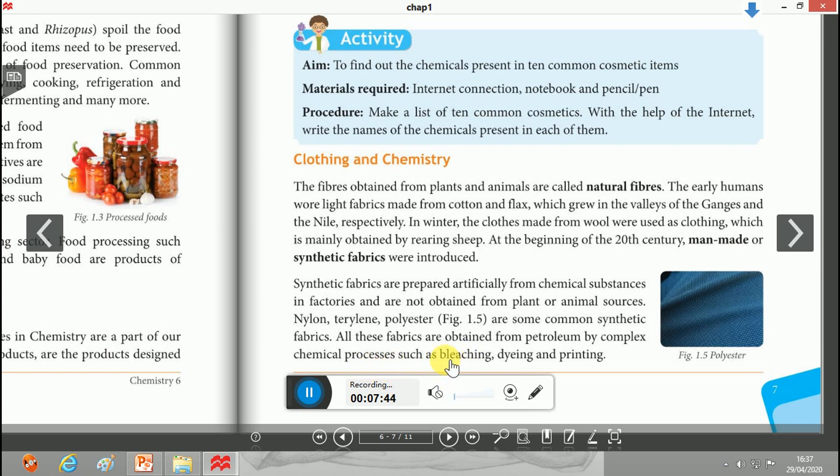All these fabrics are obtained from petroleum by complex chemical processes such as bleaching - in this case chlorine is used - dying, in which organic dyes are used, and sodium hydroxide chemicals are used, and printing. In all these steps, chemicals are the main ingredients.